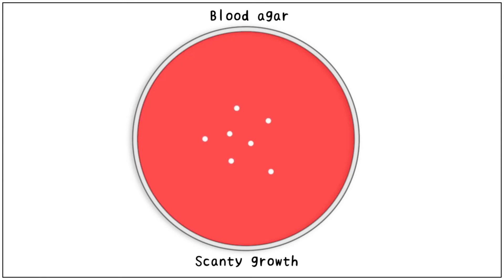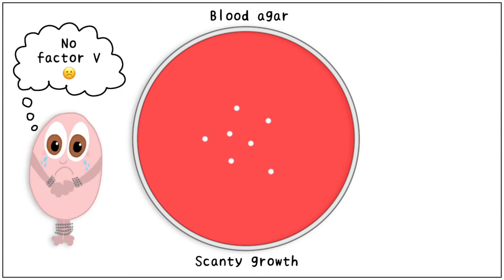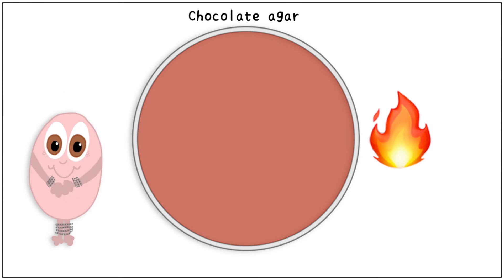To culture Haemophilus, if we use blood agar, very scanty growth is obtained. This is due to the lack of factor 5 which is trapped inside the RBCs. To make the media more favourable for the growth of Haemophilus, we heat the blood agar to obtain the brown coloured chocolate agar.